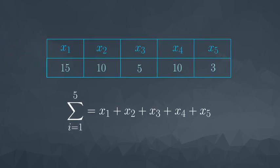But now, if we want to sum all the values in our original example, we no longer need to write out all of the x's. Instead, we can write our summation starting at i equals 1 and ending at the fifth value.